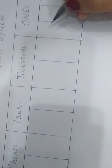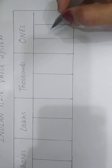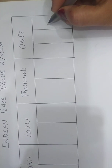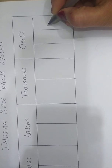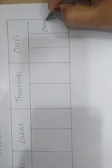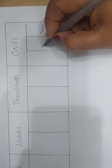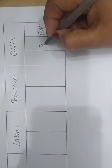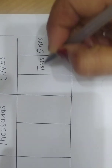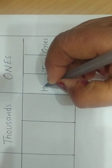The ones period is divided into three places. The first place is ones, the second is tens, and the third is hundreds.